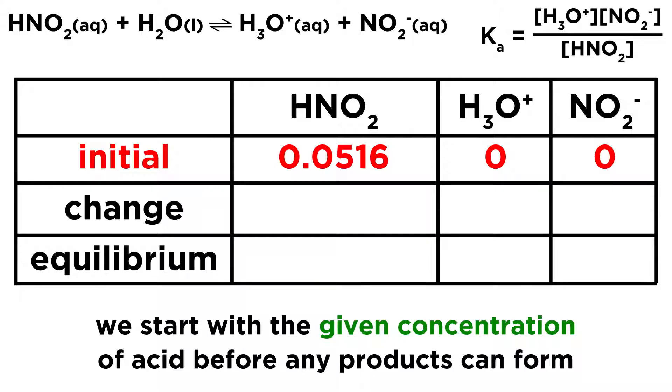that is the moles per liter of acid that exists upon placing the acid in the solution. Once it is in solution, acid-base reactions will begin. But at the beginning, we have that many moles per liter of acid, and we have no hydronium or nitrite ion. So this is prior to any ionization.